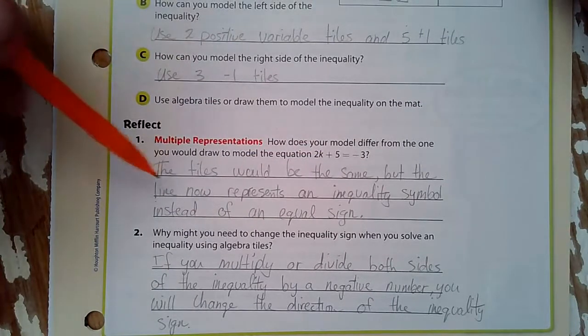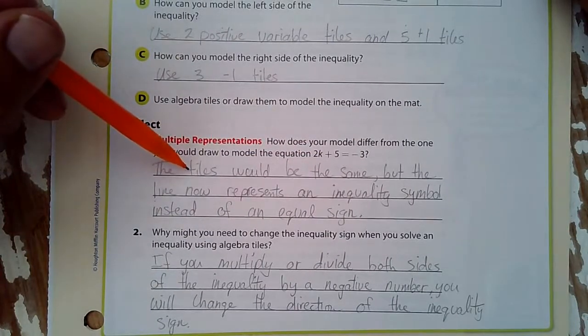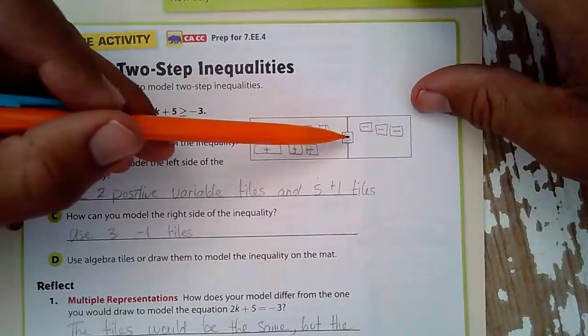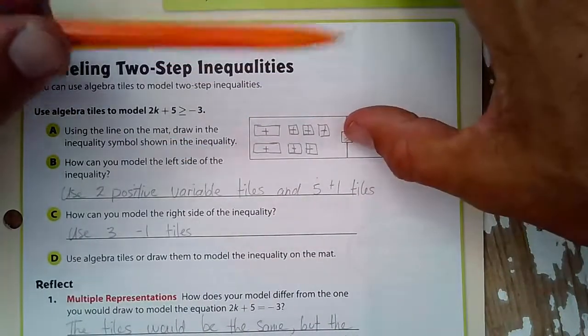So how would it be different? Well, the tiles would be the same, but the line now represents an inequality instead of an equal sign. So I guess we'll call this an inequality right there.